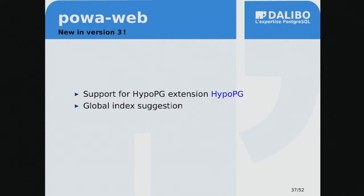So those are the basics of POWA. What's new in version 3 is that there are nice additions to automate some DBA work. The first is support for an extension called HypoPG, which enables a feature called Global Index Suggestion — something that analyzes the whole workload of your database and suggests a set of indexes to create. As far as we know, most other tools can only suggest indexes for a specific query, not for your whole database load. That's the added value of this tool.